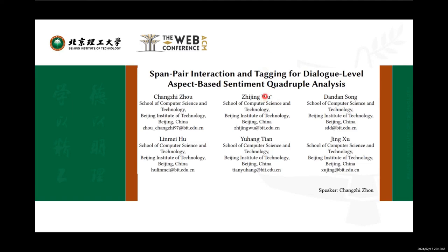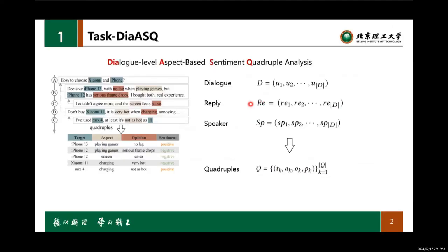Hello everyone, my name is Zhou Changzhi. Now I will introduce our paper. The DIA-ASQ task is a dialogue-level aspect-based sentiment analysis task. It aims to extract all target, aspect, opinion, and sentiment polarity from a dialogue.